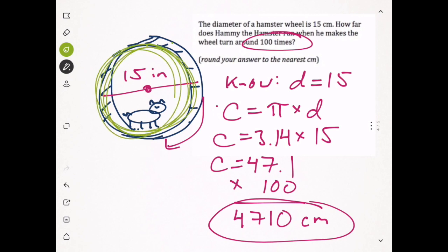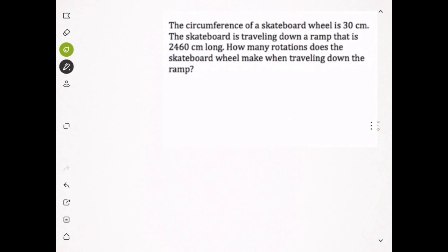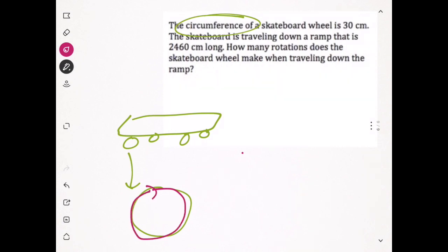Last example: the circumference of a skateboard wheel is 30 centimeters. This time it doesn't give us the diameter or radius, it gives us the circumference. That means when this wheel travels around one time, it's going to go 30 centimeters on the ground, so we don't even have to calculate the circumference - it gave it to us.